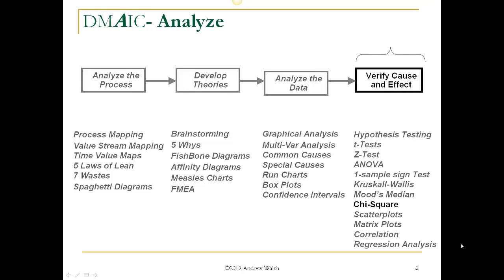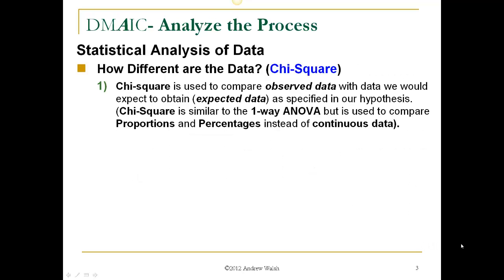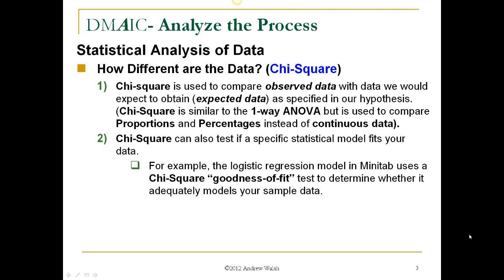In this module, we'll be looking at just the Chi-Square test itself. Chi-Square is used to compare observed data with data we would expect to obtain — the expected data — as specified in our hypothesis. Chi-Square is similar to the one-way ANOVA, but is used to compare proportions and percentages instead of continuous data. Chi-Square can also test if a specific statistical model fits your data.